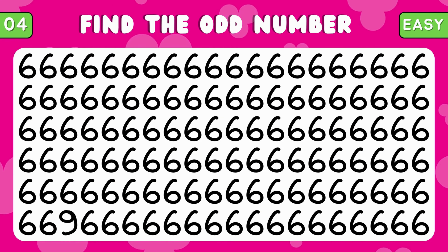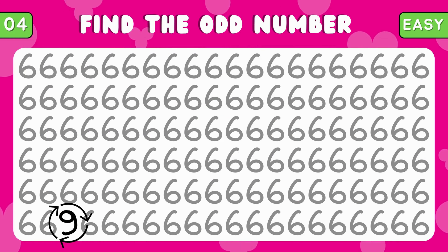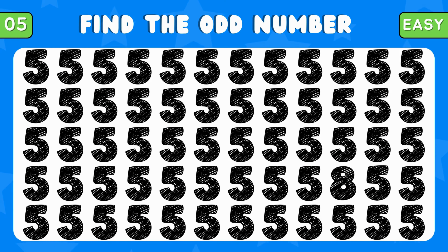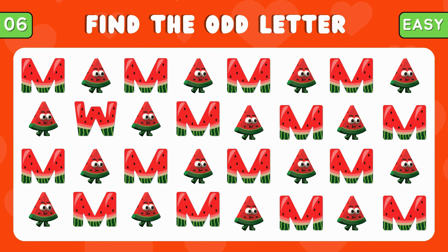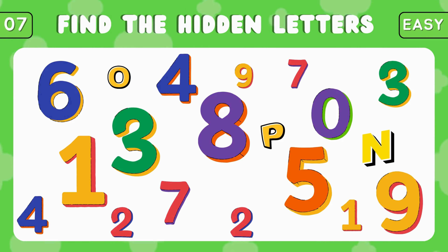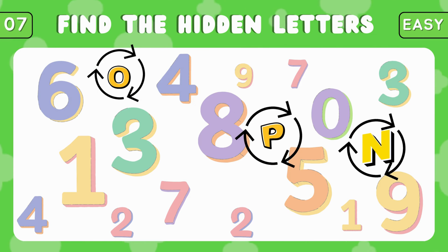Can you find the odd number? Great job. Find the odd number. Keep going. Can you find the different letter among these watermelon emojis? Correct. It's the letter W. Await your observations. Take a closer look.